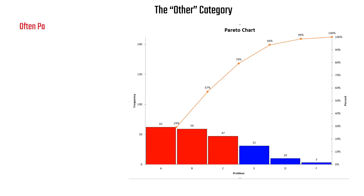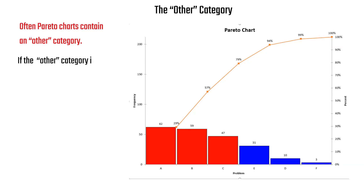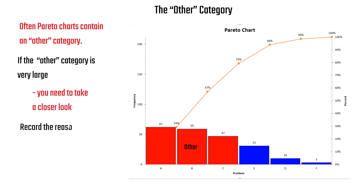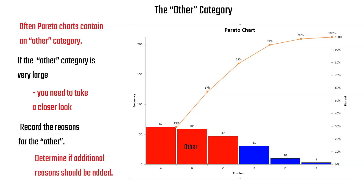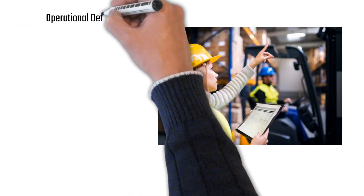Many Pareto charts contain an 'other' category. If that category is very large, that's not good — you need to take a closer look. You should always record the reasons behind 'other,' because eventually you may need that data to determine if additional reasons should be added to the chart.